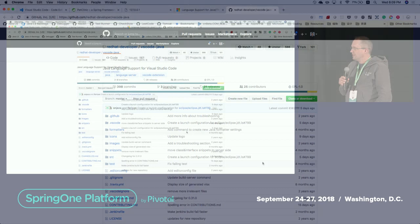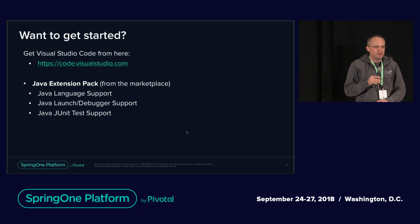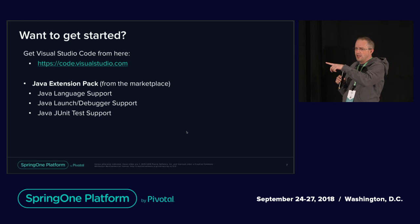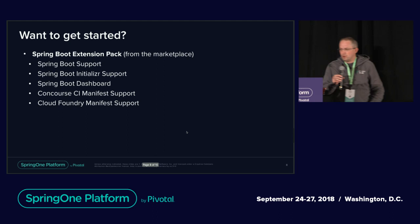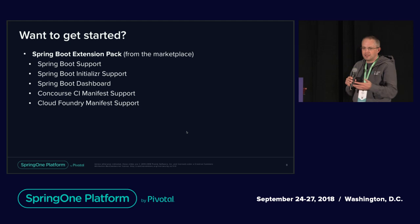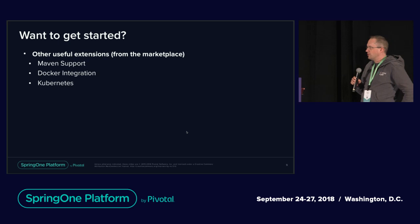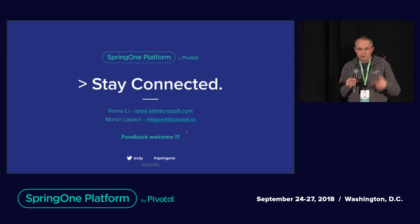We have a few slides just as a reference for how to get started — we'll put them online. You can download VS Code from the website. There's a Java extension pack containing these extensions, and a Spring Boot one containing the others. Take a look on Twitter or the website for the PDF. If you want to ask further questions, we are here — come up to the stage, we are happy to answer more questions. Thanks for asking questions in between. We hope you enjoyed the session, and thanks for coming.